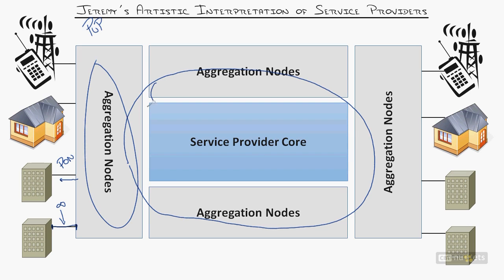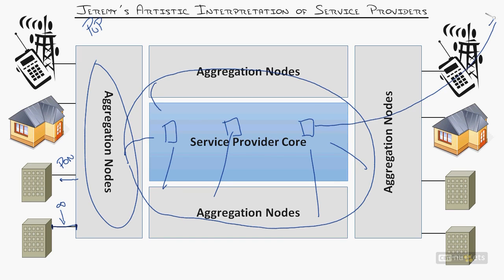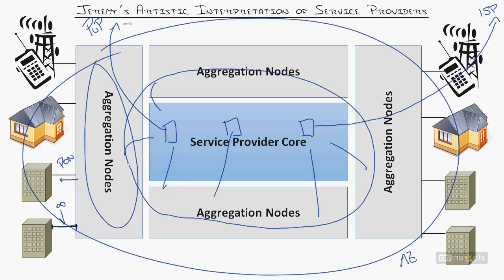All of it will eventually come back to the service provider core. In the service provider core, we have the aggregation points that bring in all these different nodes. Maybe that core reaches out to other areas — maybe this is where we uplink to other internet service providers that this service provider has a carrier agreement with. Maybe this service provider core uplinks to other service provider cores. Essentially, this carrier may be a national carrier, so this represents one major region like Arizona, and then it links to California, Nevada, and all these other locations where the carrier operates — and you would see the same model replicated there.